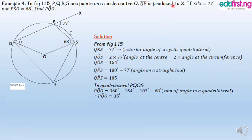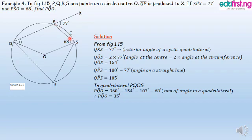QP is produced to X. If angle XPS equals 77 degrees and angle PSO equals 68 degrees, find angle PQO. We have to find this angle here.